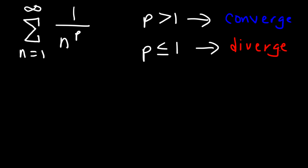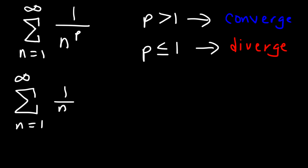That's pretty straightforward, so let's work on some example problems. Let's start with the harmonic series, 1 over n. So what is p in this example? Well, p is the invisible number 1, and so if p is equal to 1, we know that the series is going to diverge.